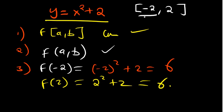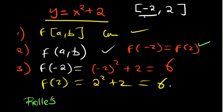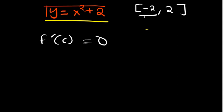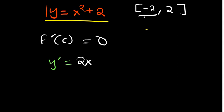So f(-2) = f(2) = 6. The third condition is also satisfied. Therefore, we can conclude that Rolle's Theorem is satisfied, and it tells us there should be a certain point c where we expect the derivative to be equal to zero. The derivative of this function is y' = 2x. We do expect a point where this equals zero.